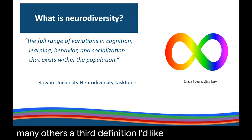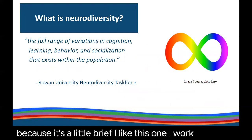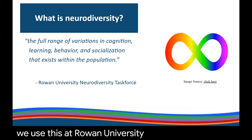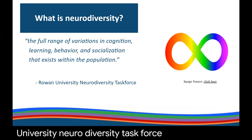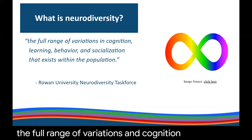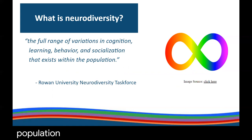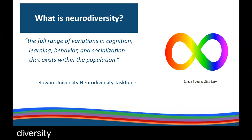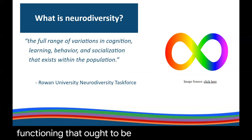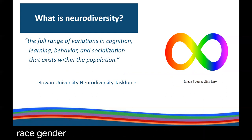A third definition used at Rowan University within the Rowan University Neurodiversity Task Force: neurodiversity is the full range of variations in cognition, learning, behavior, and socialization that exists within the population. The commonality across definitions is that we all have brain differences. Neurodiversity refers to variations in neurocognitive functioning that are to be recognized and respected just as any other human diversity — like race, gender, or sexuality.